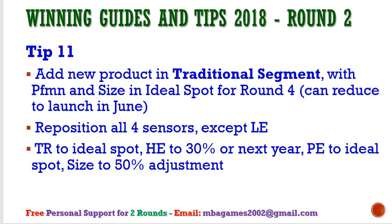Tip: In Round 2, add a new product in the traditional segment — it's the most profitable. Add the new product with performance and size close to the ideal spot of Round 4, so it can be launched next round. From Round 3, we get seven products to sell; adding one more in Round 3 gives eight products by Round 4. We don't update low-end products since they're already optimal. For traditional, it's easy to update to the ideal spot; for high-end, reduce about 30% toward the ideal spot.